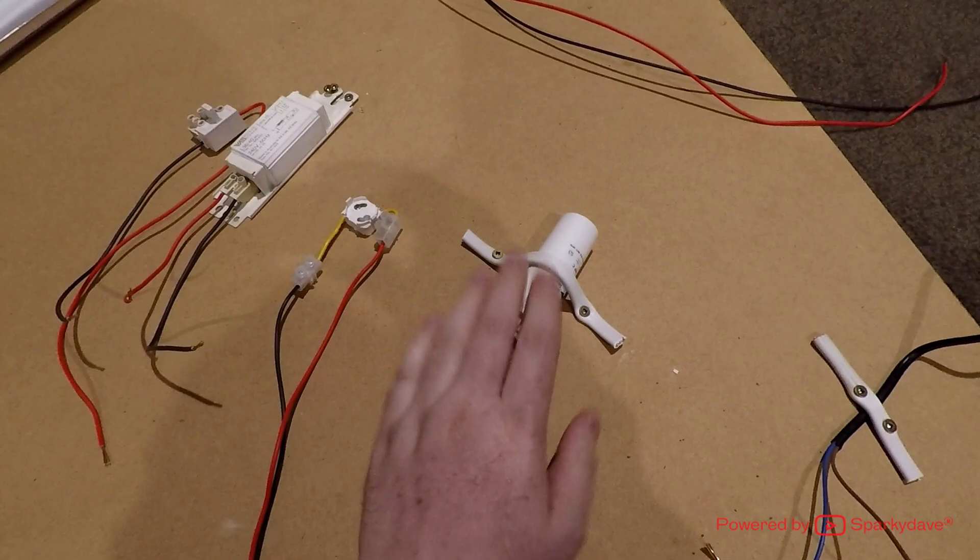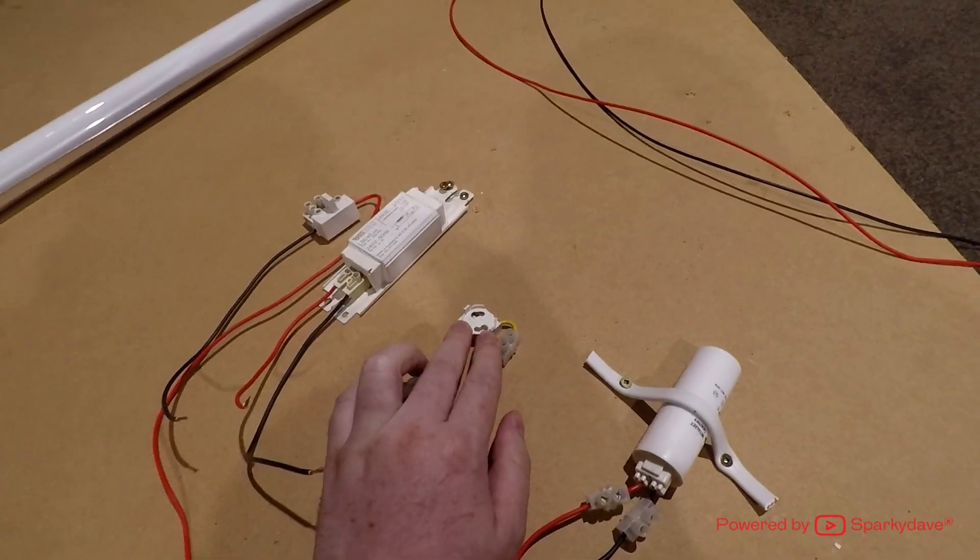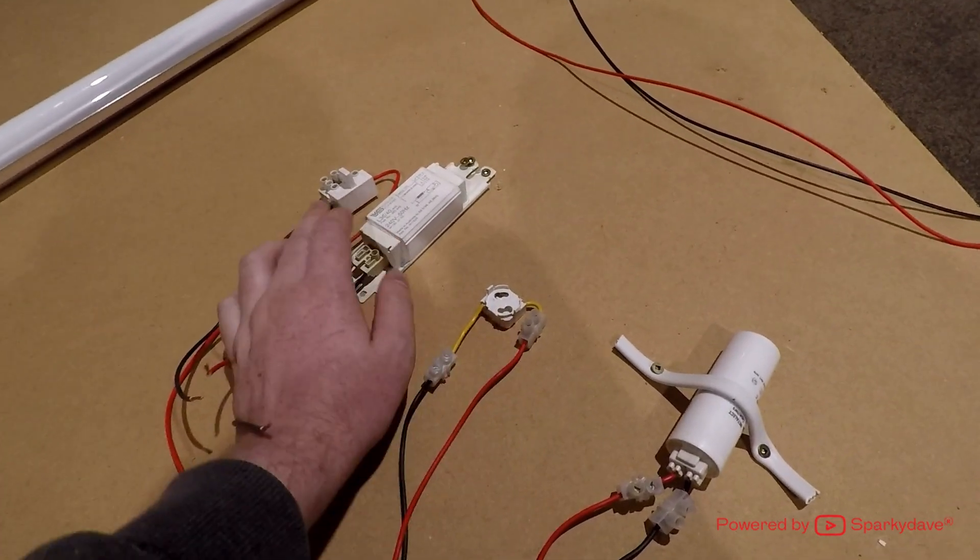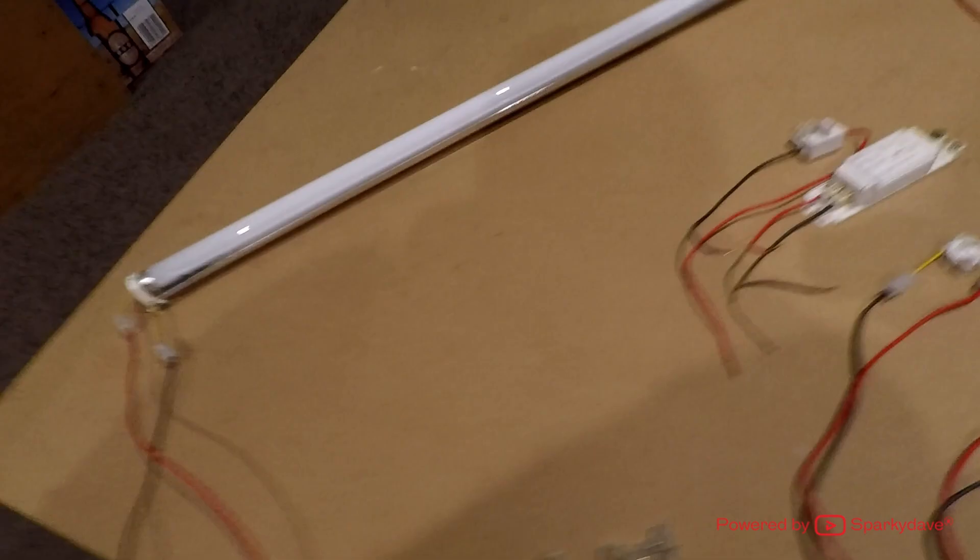The components inside the fitting include the capacitor, starter, the ballast, the fuse and wiring harness, and the light itself.